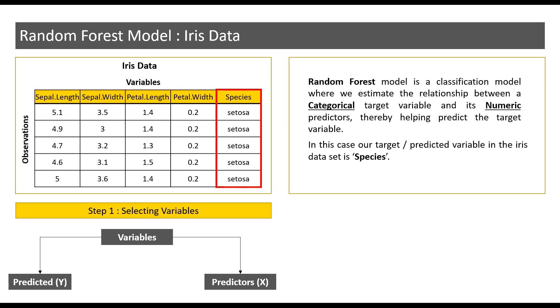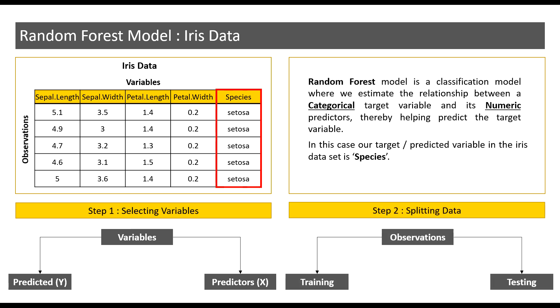It is also important to note that when it comes to classification models, the only way to be sure as to whether or not we have chosen the correct predictors is via trial and error. Now, step two, that is splitting data.